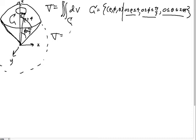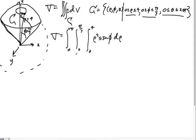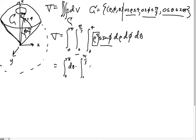So the volume V is set up as an iterated integral: from 0 to 2π in θ, 0 to π/3 in φ, and 0 to 4 in ρ. The function is just 1, and dV in spherical coordinates is ρ²sinφ dρ dφ dθ. Since the ρ² factor depends only on ρ, sinφ depends only on φ, and there's no θ factor, we can break this into a product of three single-dimensional integrals.